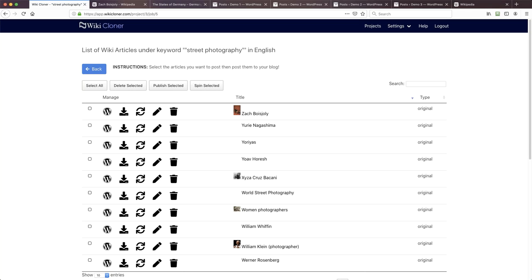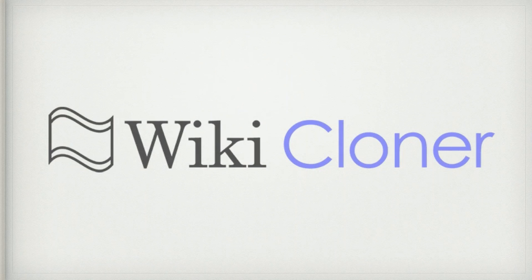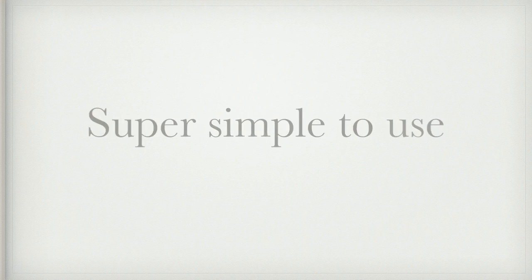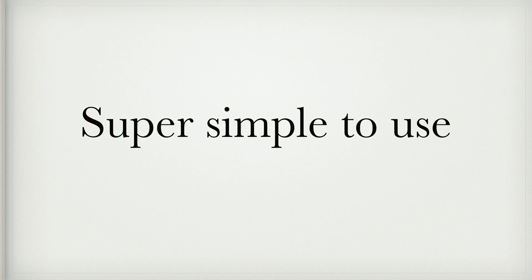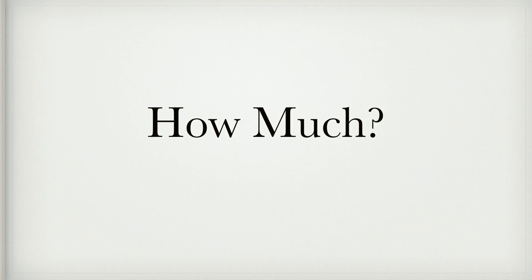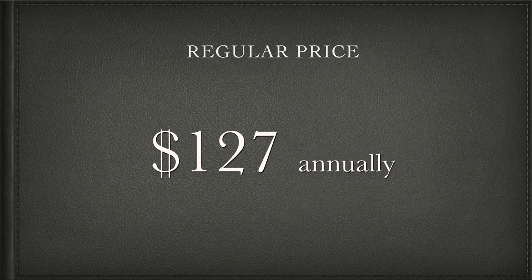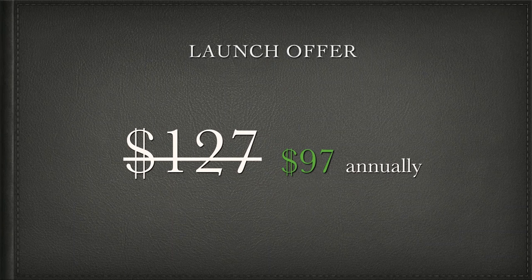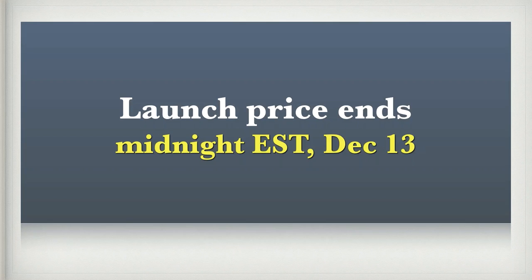Glenn says: which niche will this work in? Any niche that Wikipedia has content in — real simple. If you can search Wikipedia and find content, then this will work. Glenn also asked: can this content be sent to Facebook groups via Face Group Automator to give posts even more traffic? That's actually the offer we're making as a one-time upsell after the main purchase. The regular price is $127 annually — that's a great price. But until the end of the promo, which is midnight EST Friday December 13th, you can get this for $97 annually.